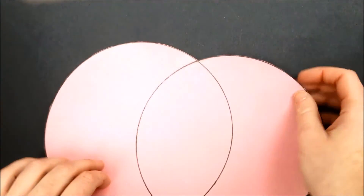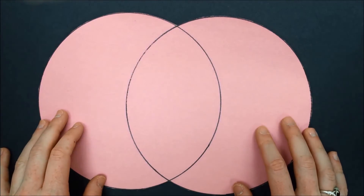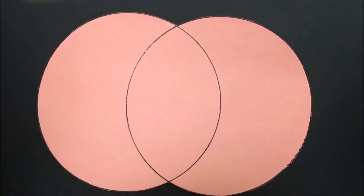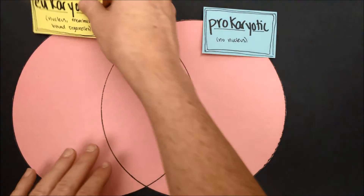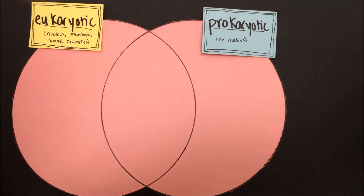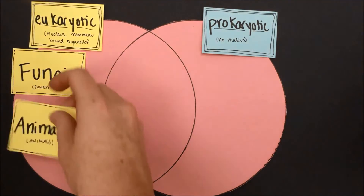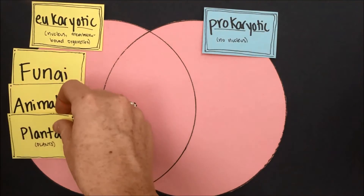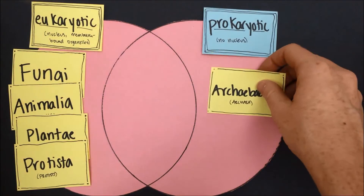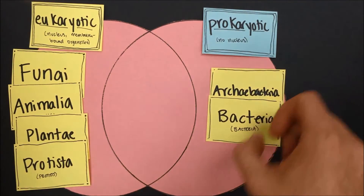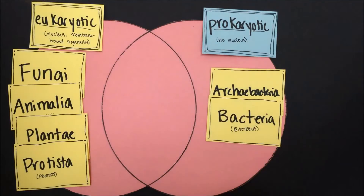Let's examine in more detail some of the similarities and differences between these different kingdoms of life. Let's first examine cell structure. Cells can either be prokaryotic or eukaryotic. Our eukaryotic kingdoms are fungi, animals, plants, and protists, while our prokaryotic kingdoms are archaea and bacteria. There's no overlap because there's no way that an organism can be both prokaryotic, which means lacking a nucleus, and eukaryotic, which means having a nucleus.